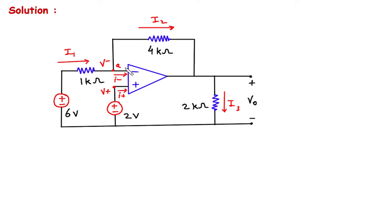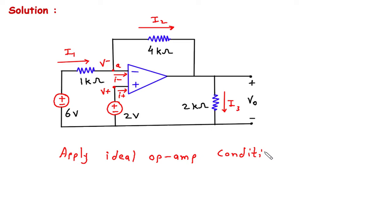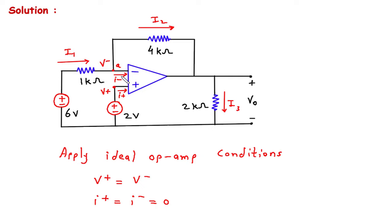Now, let's say this is node A. We will apply ideal op-amp conditions. The ideal op-amp conditions are: V+ is equal to V- — the non-inverting terminal voltage is equal to the inverting terminal voltage — and the second condition is I+ = I- = 0, meaning both terminal currents are equal to zero.